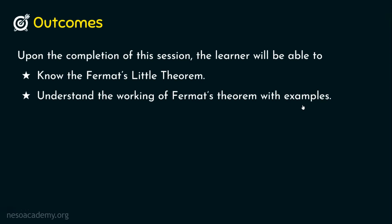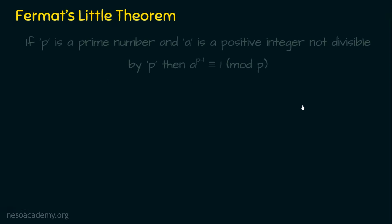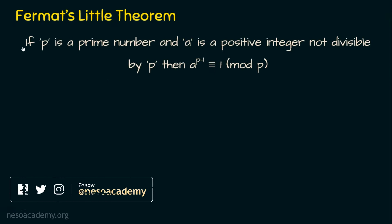Let's dive into the theorem first. Fermat's Little Theorem states that if p is a prime number and a is a positive integer not divisible by p, then a to the power p minus one is congruent to one mod p.